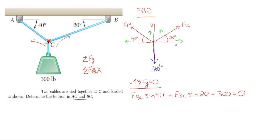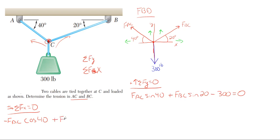With two unknowns in the y-equation we can't solve it yet, so we move to the x-equation. We take everything to the right as positive and everything to the left as negative. FAC's x-component points leftward, so it's negative, and since the angle is off the x-axis it uses cosine - so minus FAC cosine 40. FBC's component points to the right, so it's positive: plus FBC cosine 20. The 300-pound force is only in the y-direction, so there are no other forces in the horizontal equation, and it equals zero.